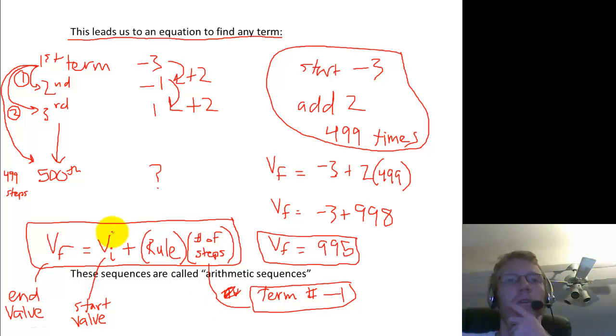And remember the number of steps is number of terms or say term number minus 1. Okay? So if you know the initial value and you know the rule, you could find the 10th term by taking 9 steps forward. You could find the 100th term by taking 99 steps forward. Or you could find any term in the entire sequence by taking the number of steps forward needed to get to that term.